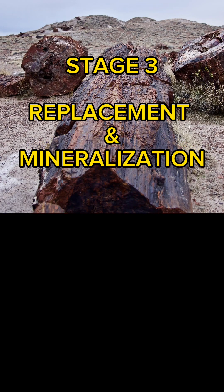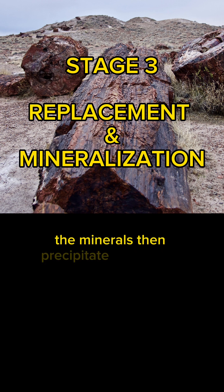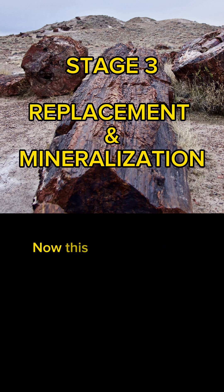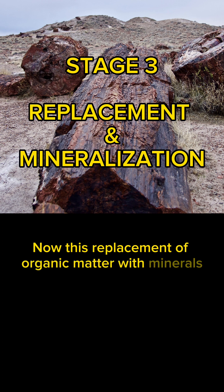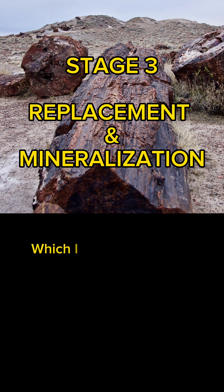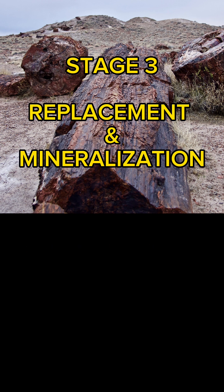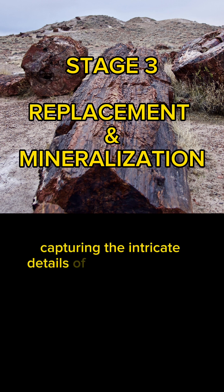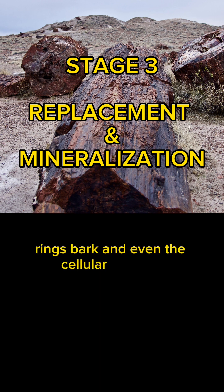Stage three: replacement and mineralization. During the petrification process, the minerals precipitate and fill the empty spaces left by the decaying wood cells. This replacement of organic matter with minerals is called permineralization — which I did try to write in the title, but it was too long, so you're going to have to deal with mineralization. The minerals may retain the original structure of the wood, capturing the intricate details of the tree's growth rings, bark, and even cellular features.